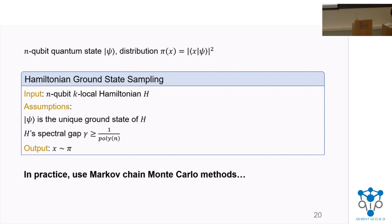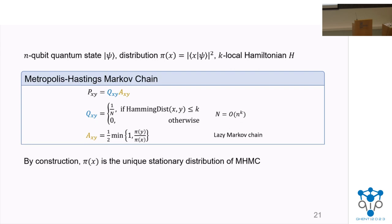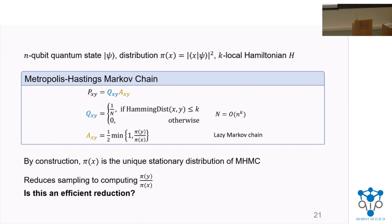Condensed matter physicists solve this problem in practice using Markov chain Monte Carlo methods like the Metropolis-Hastings Markov chain. Metropolis-Hastings refers to a particular way of assigning transition probabilities P_{XY} for defining a discrete-time Markov chain. Suppose the chain is in state X; it proposes to move to a state Y differing from X in at most k bits, chosen uniformly at random, where k is the locality of the Hamiltonian. It accepts the move with probability one half times π(Y)/π(X). It is easy to check that π is the unique stationary distribution of this Markov chain. The acceptance probability reduces Hamiltonian ground state sampling to computing ratios of ground state probabilities.